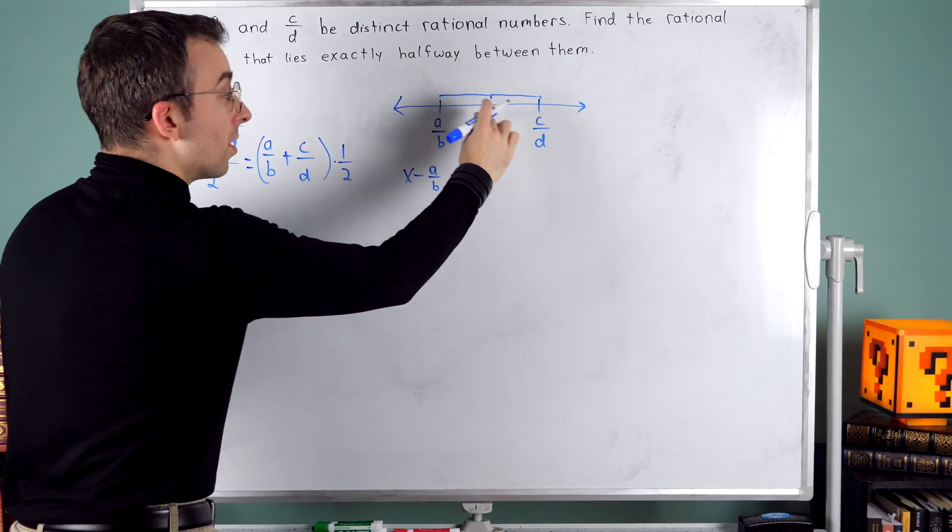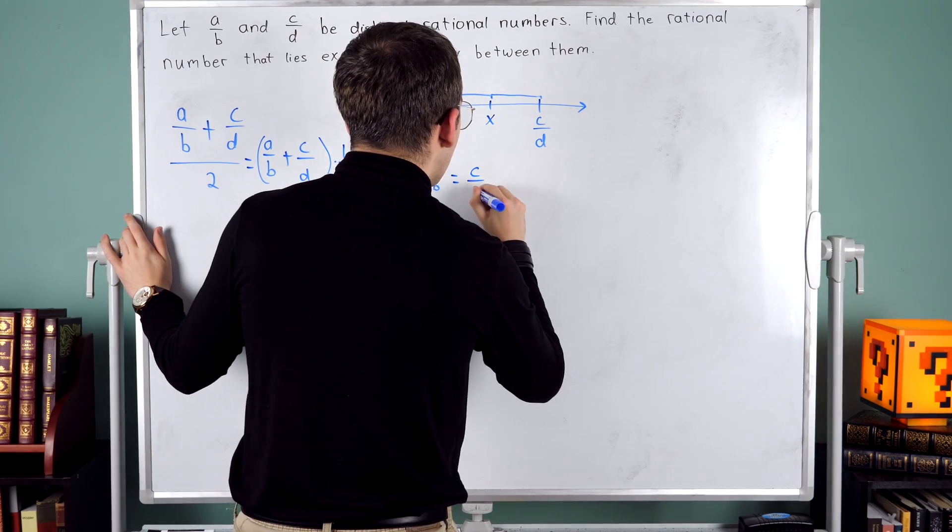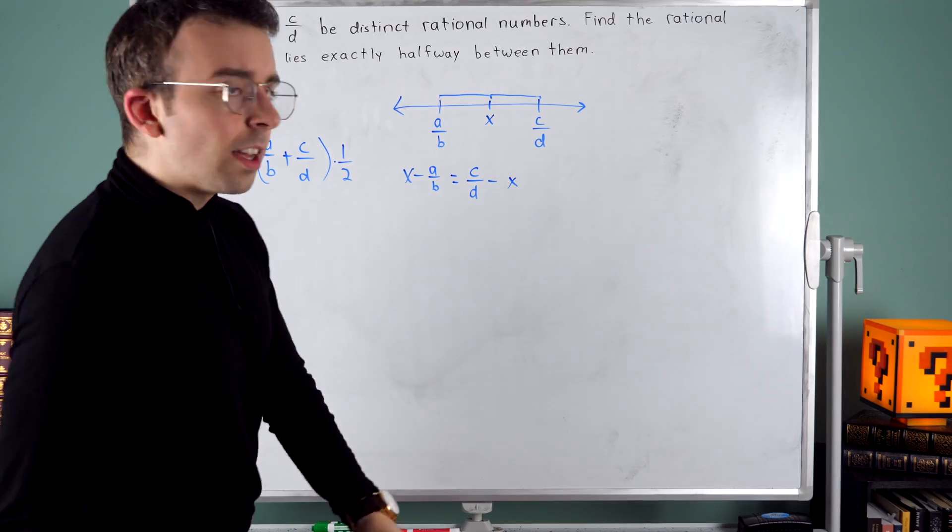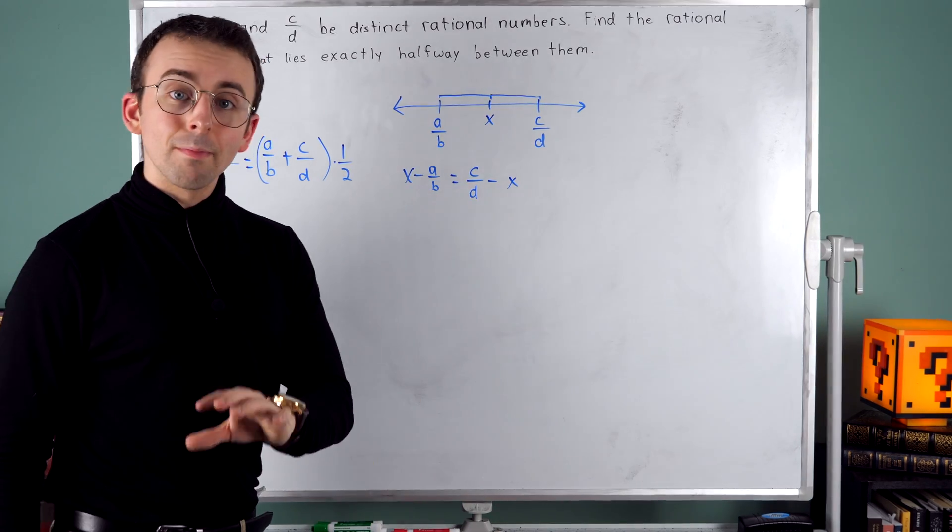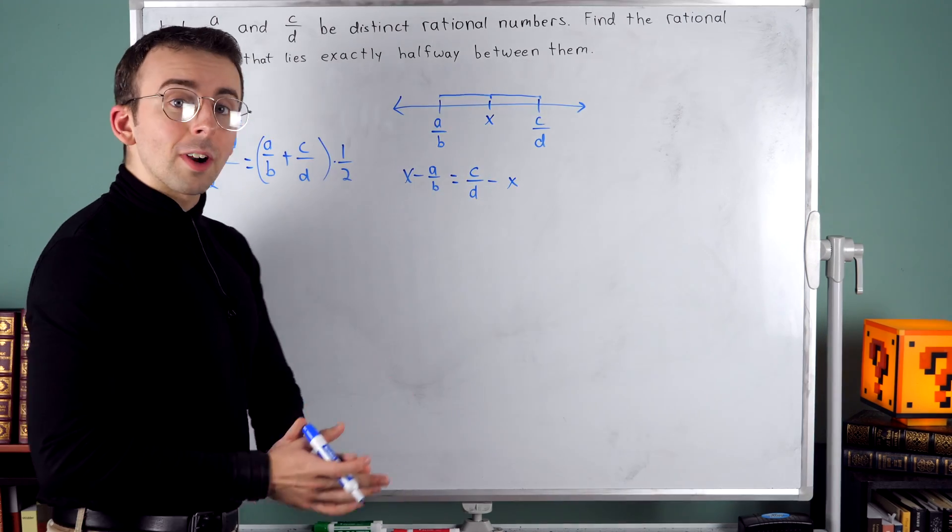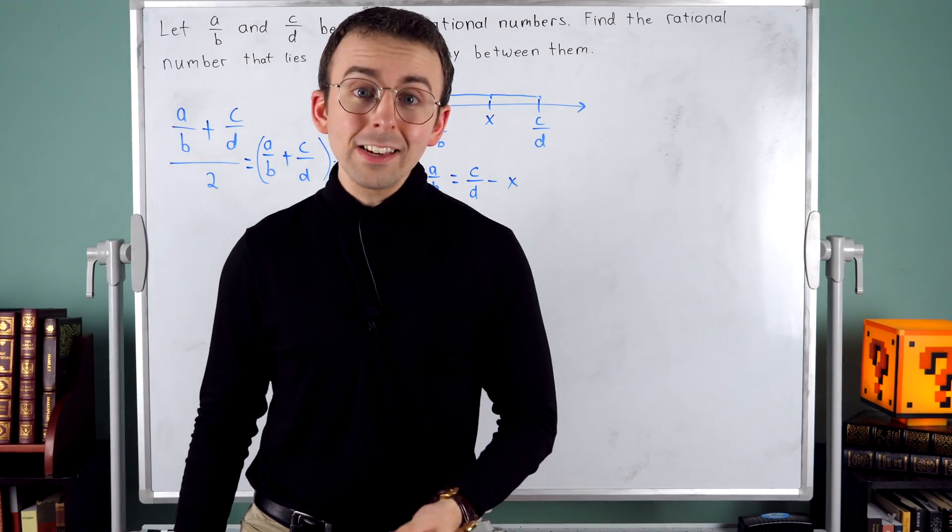So now I have this equation x minus A over B equals C over D minus x. All that remains is to solve this equation for x, which is the number I'm interested in.